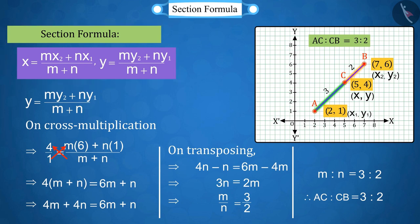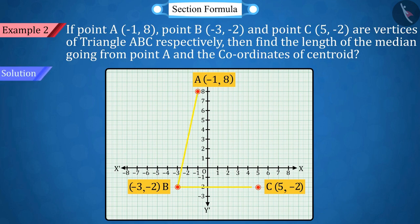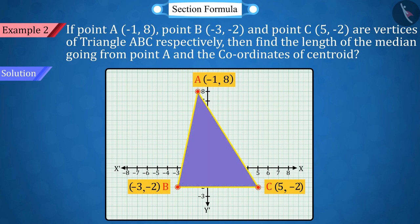Let's look at another example. If point A is (-1, 8), point B is (-3, -2), and point C is (5, -2) are the vertices of triangle ABC respectively, then can you find the length of the median going from point A and the coordinates of the centroid? Come, let's solve it. First, let's construct triangle ABC.